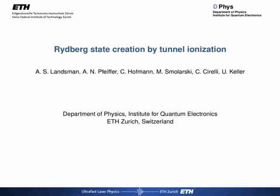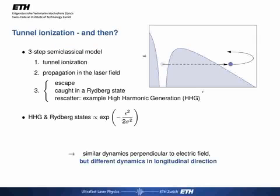Welcome to this video abstract on Rydberg state creation by tunnel ionization. When a strong laser pulse is applied to an atom, the atomic Coulomb potential is tilted and an electron can tunnel through the potential barrier.